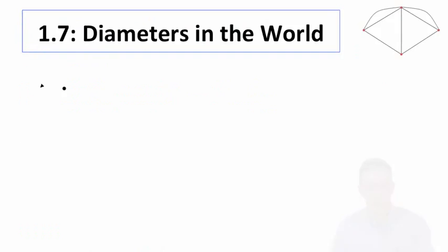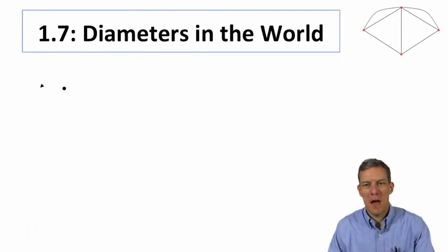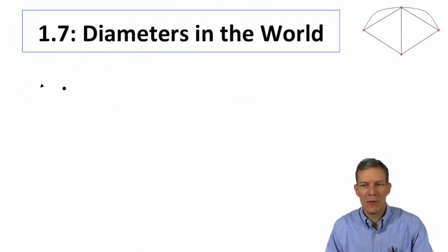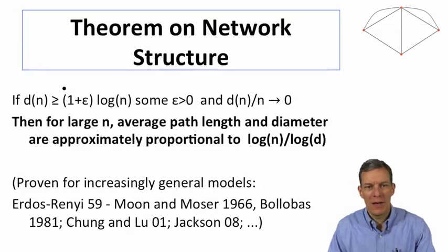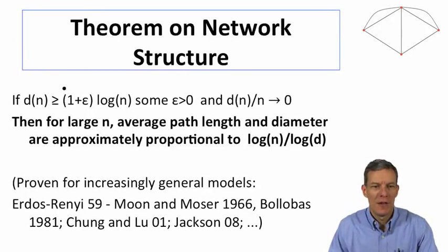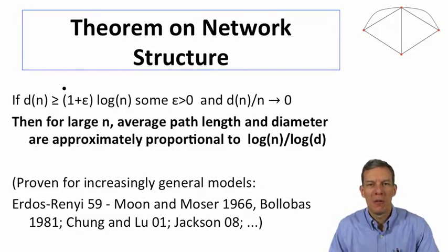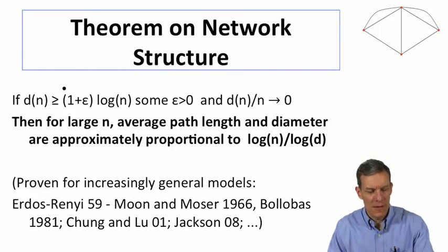Hi folks. It's time to talk a little bit now about some observations of actual diameters in the world. And if you recall, we talked about diameters in random graphs of a particular form, and we were finding that for large enough graphs and degrees that weren't too large or too small, log n over log d was an approximation of the average path length and diameter.